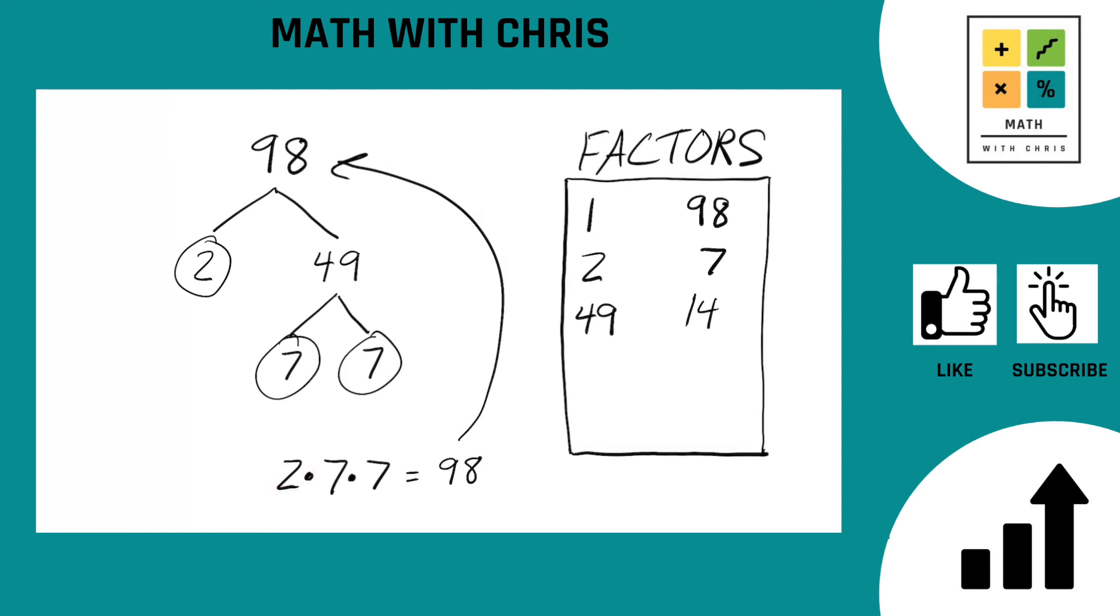What about here? Two times seven, we already got that. What about seven times seven is 49, we already got that. And we're actually already done. Only six factors of 98. We found them all pretty quick there.